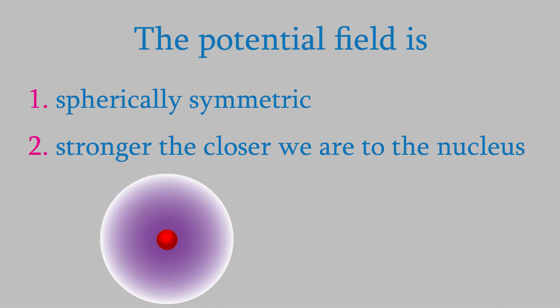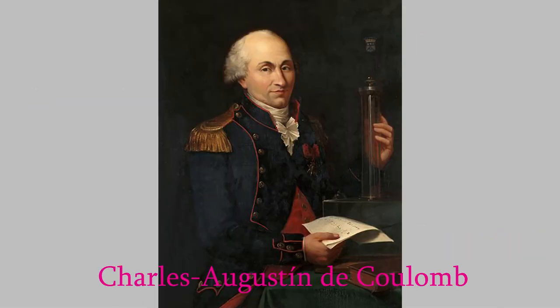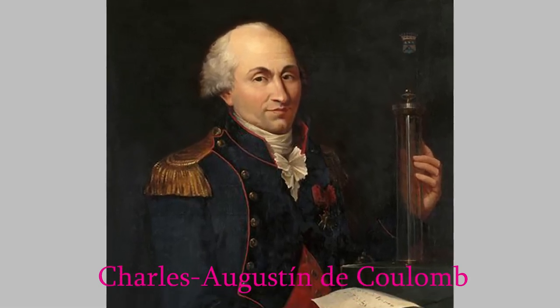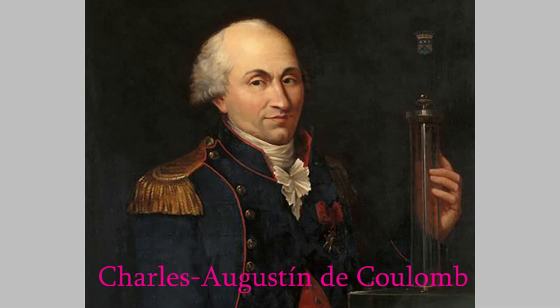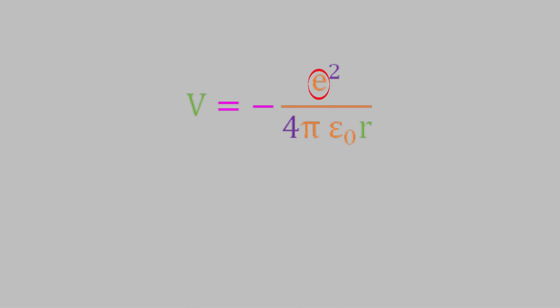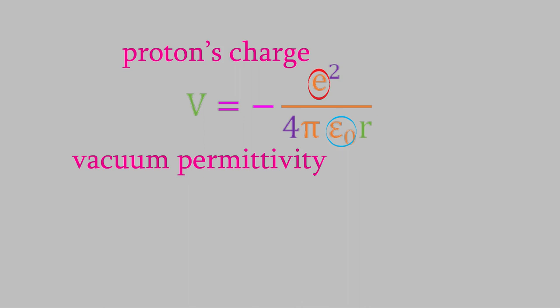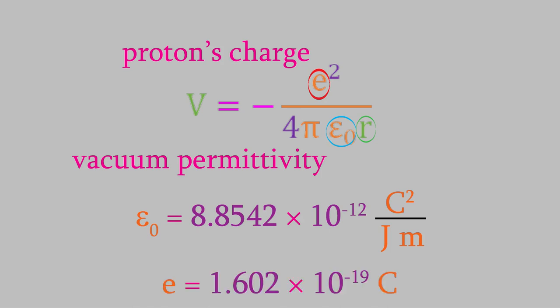The potential created by the nucleus is a very common one you'll see in many situations in physics, and is called a Coulombic potential, after the French physicist Charles-Augustin de Coulomb, who discovered the way an electric potential between charged particles changes with distance in 1785. The potential energy generated by the Coulombic potential in a hydrogen atom is given by this equation. Here, E is the charge on a proton, epsilon-naught is a constant called the vacuum permittivity, and r is the distance between the proton and the electron. The value of epsilon-naught can be found in any physics text and inside the back cover of our textbook, and the same is true for the charge on the proton.